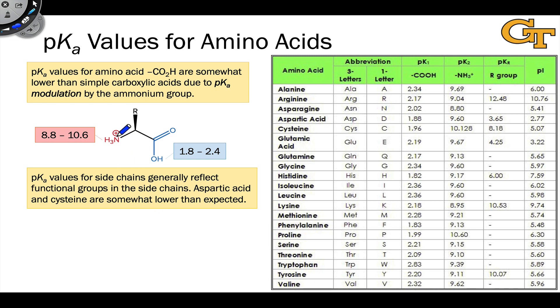For example, the ammonium cation in an amino acid has a pKa of somewhere between 8.8 and 10.6, which is typical of ammonium, and the carboxylic acid proton is much more acidic and has a pKa on the order of 1.8 to 2.4.